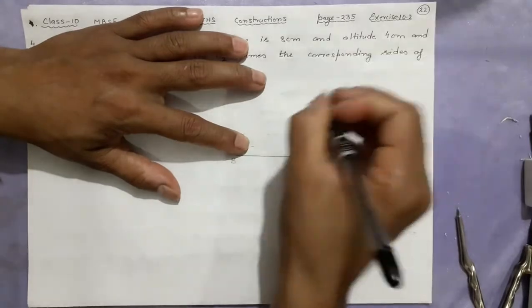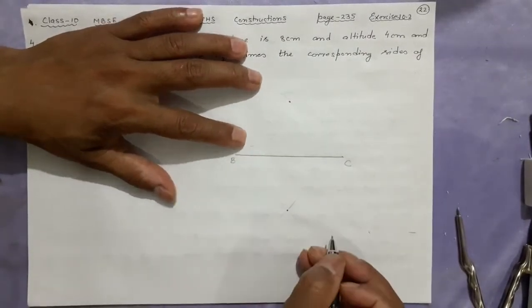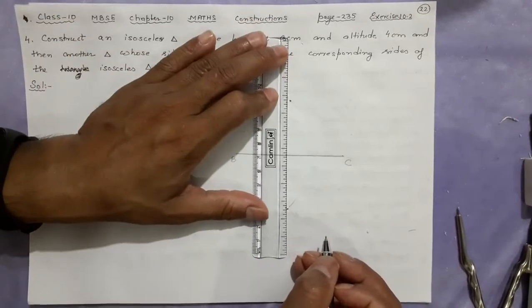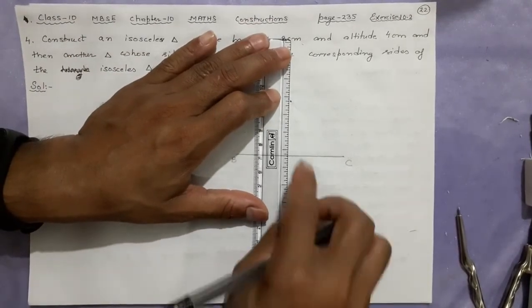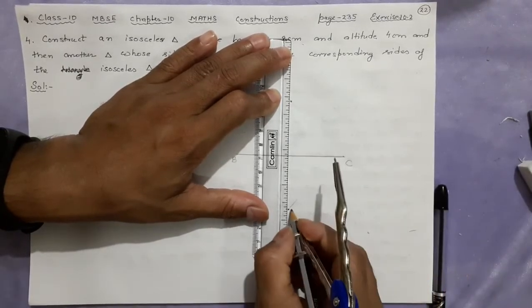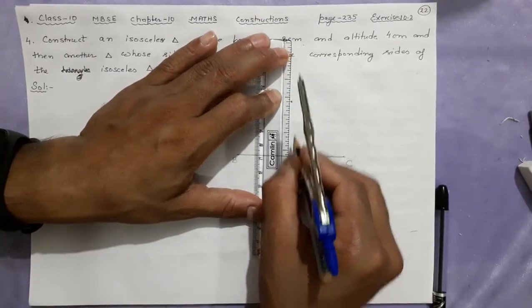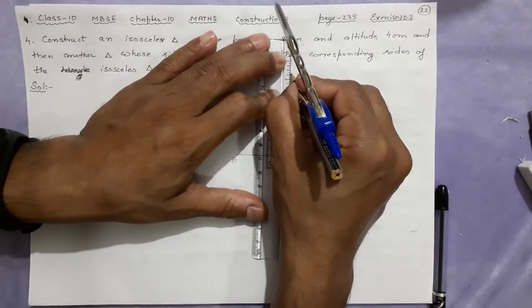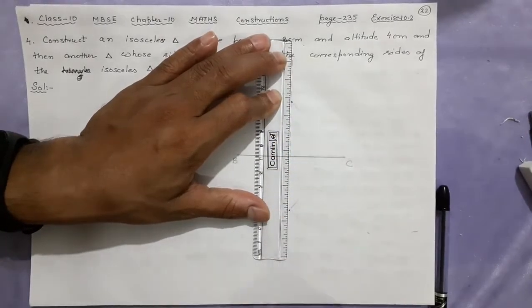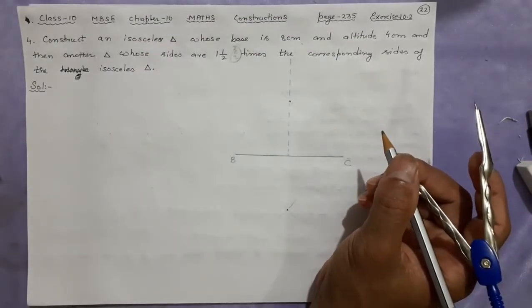We are going to join these two points, this intersection point here. Let us join. I'll join only the upper side because I don't need the lower triangle, I need only the upper triangle. Here I'll put the pencil but I'll draw only this side.